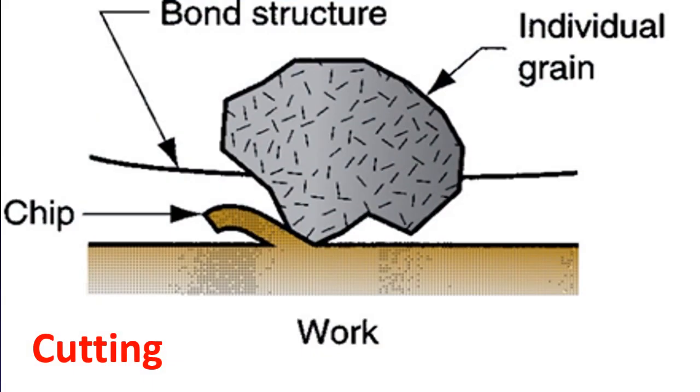There are three types of grain action that can be recognized. First, cutting, where the grit projects far enough into the surface to form a chip and material is removed.